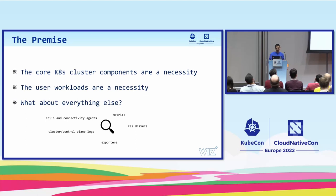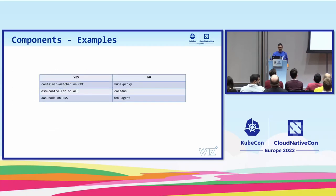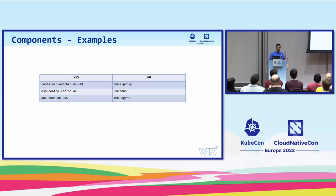This is something that's very critical to operate a production-level cluster. The examples are: container watcher on GKE, OSM controller on EKS, AWS node on EKS — but not kube-proxy, because kube-proxy is an integral part of the Kubernetes control plane. And core DNS also — these are things we must have.